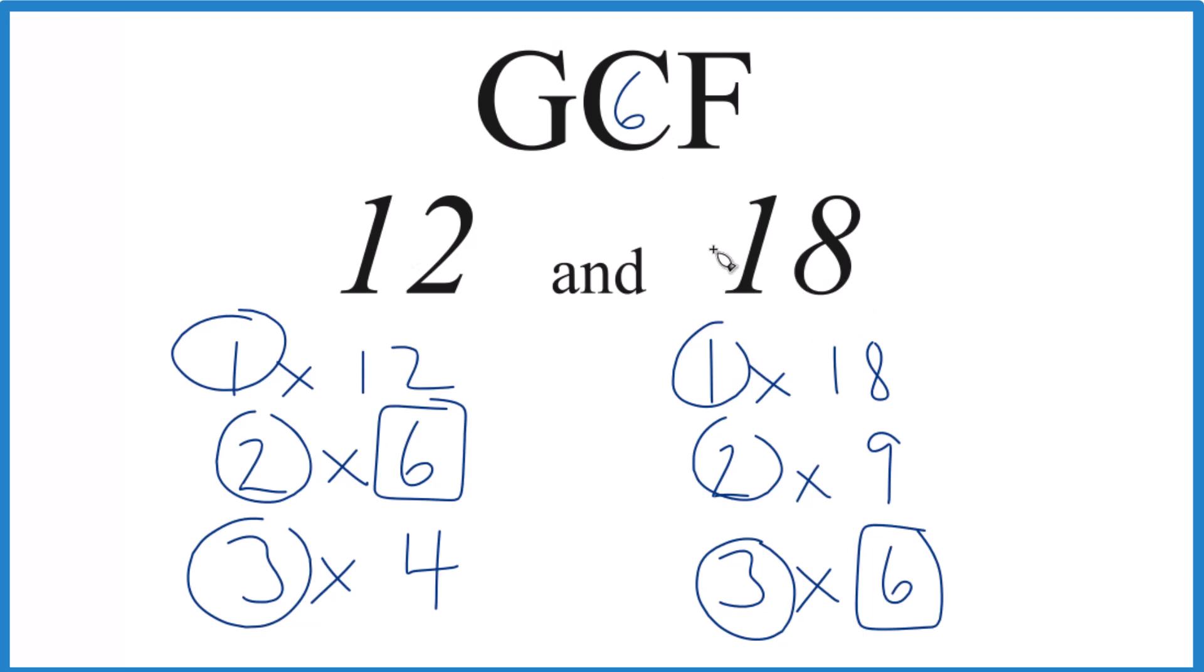So that's it. This is Dr. B finding the greatest common factor for 12 and 18. There are other ways to do this. You could use prime factorization, but for these numbers here that aren't very big, this works really well.